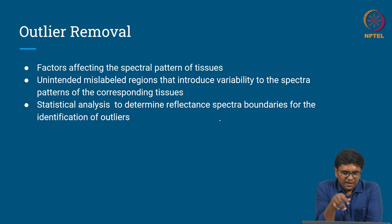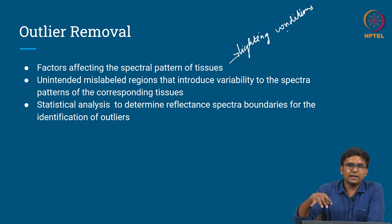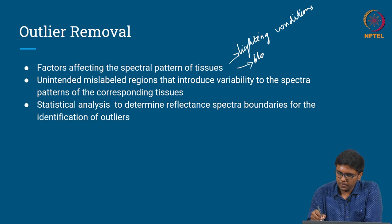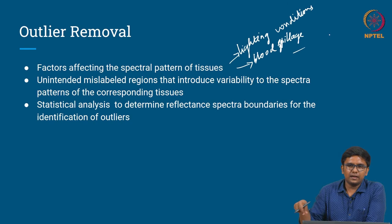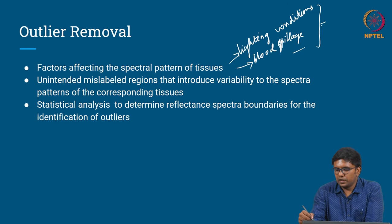The first step is outlier removal. There are many factors that affect the spectral pattern of tissues: lighting conditions in the operating room, since some surgeons operate with very bright light while others use mid-brightness, and the presence of blood in the tissues. During surgery, blood can spill around the surgical field, affecting the spectral pattern. There can also be mislabeled regions introducing variability. All these are characterized as outliers. Statistical analysis is used to determine the reflectance spectra boundaries for outlier identification.